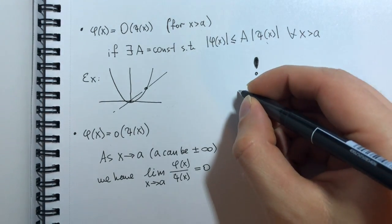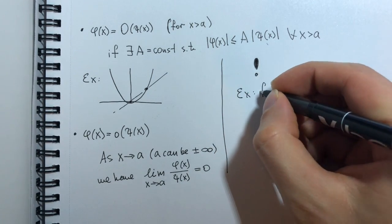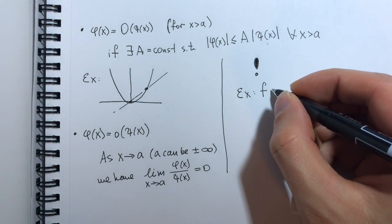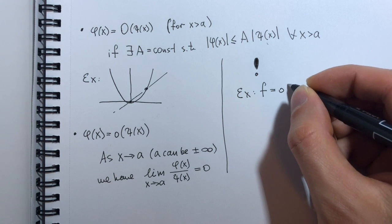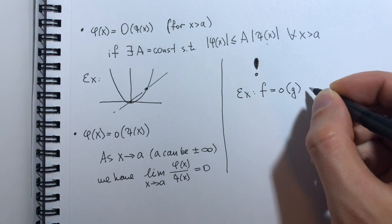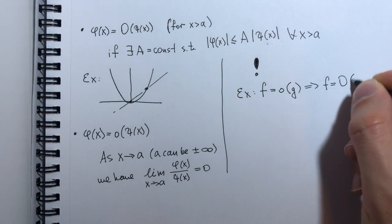it's a small exercise to show that if F is equal to little o of G, then it's also equal to big O of G.